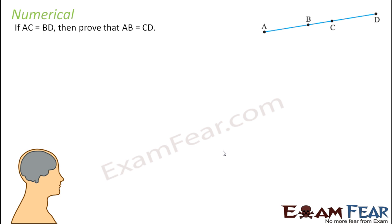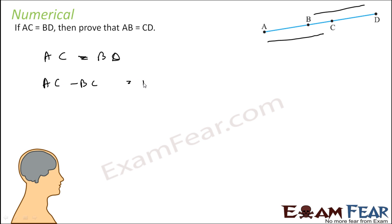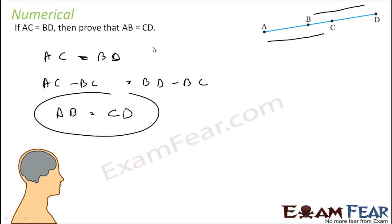If AC equals BD, prove that AB equals CD. Given AC equals BD, subtract BC from both sides — equals subtracted from equals are equal. AC minus BC gives AB, and BD minus BC gives CD. Thus AB equals CD.